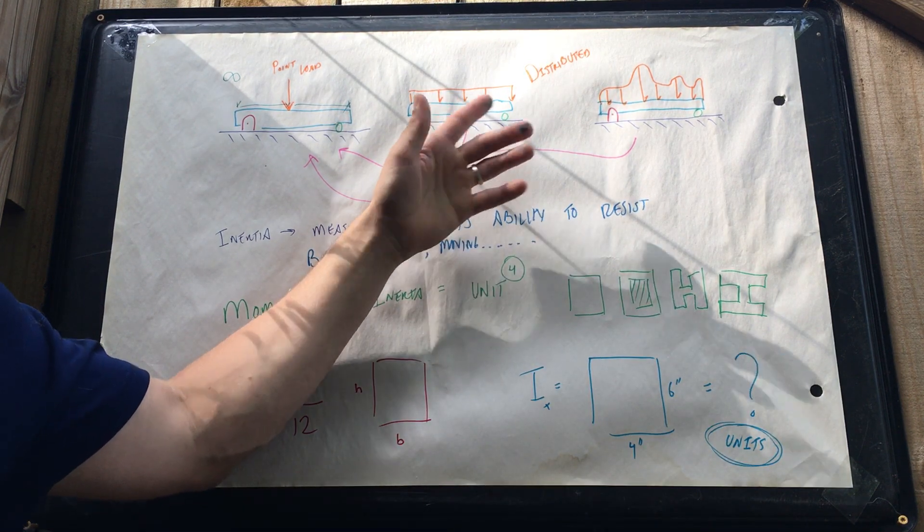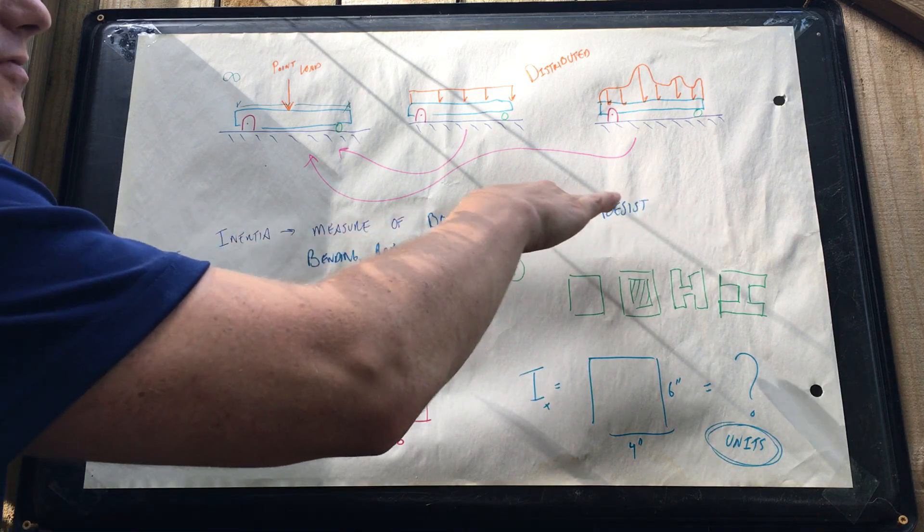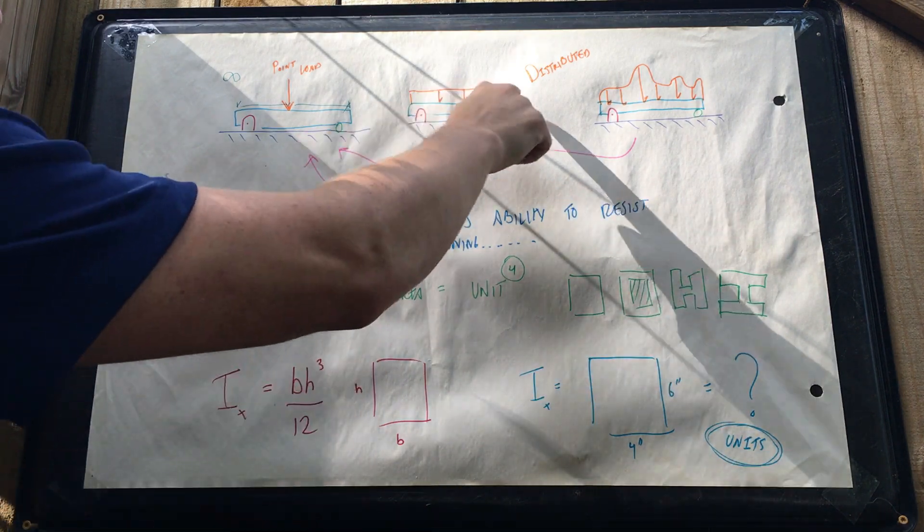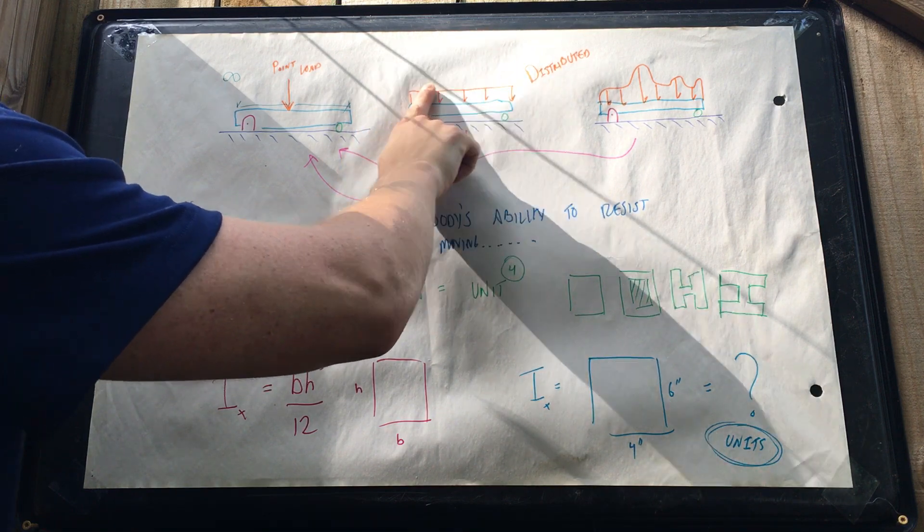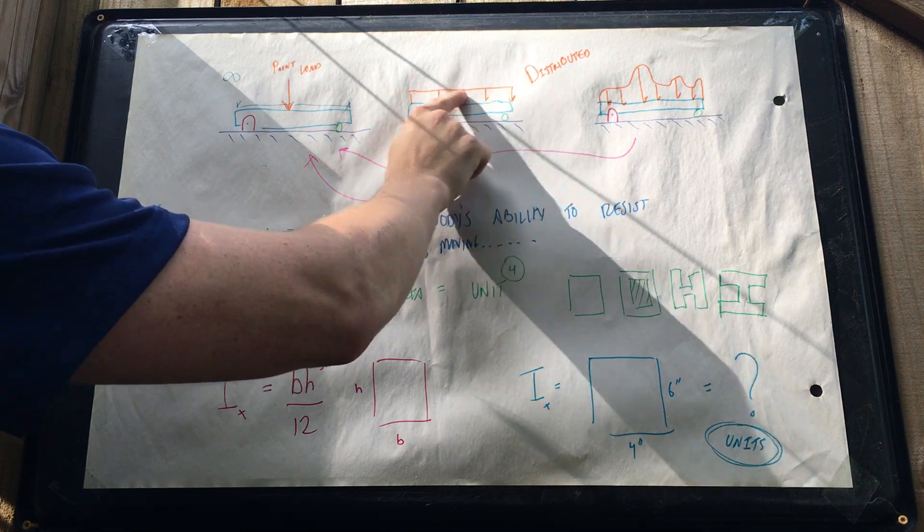Next thing we have is a distributed load. The easiest way to describe this is think about when you have a bridge and you have even pavement and cement and rebar across the whole bridge. Nothing's more regular than that. Everything's the same. So that's called an evenly distributed load.